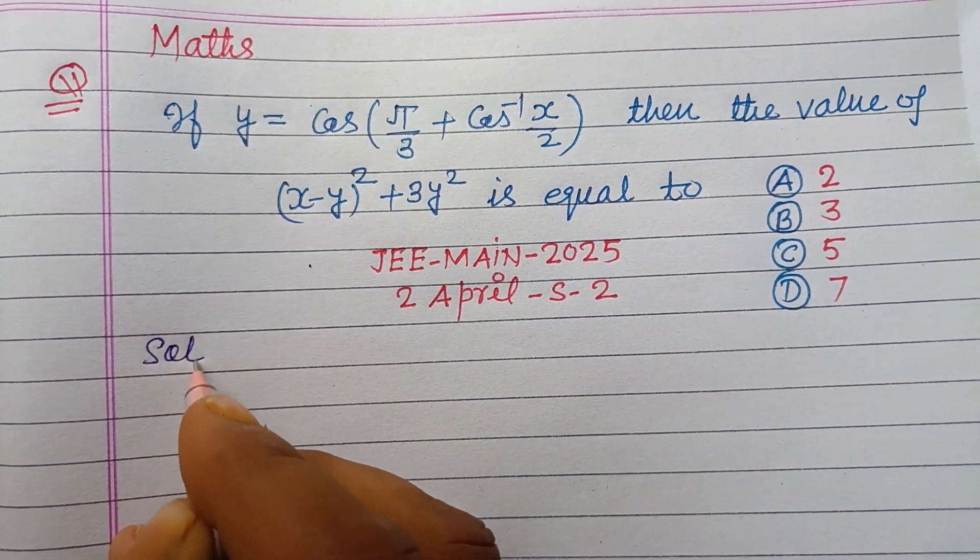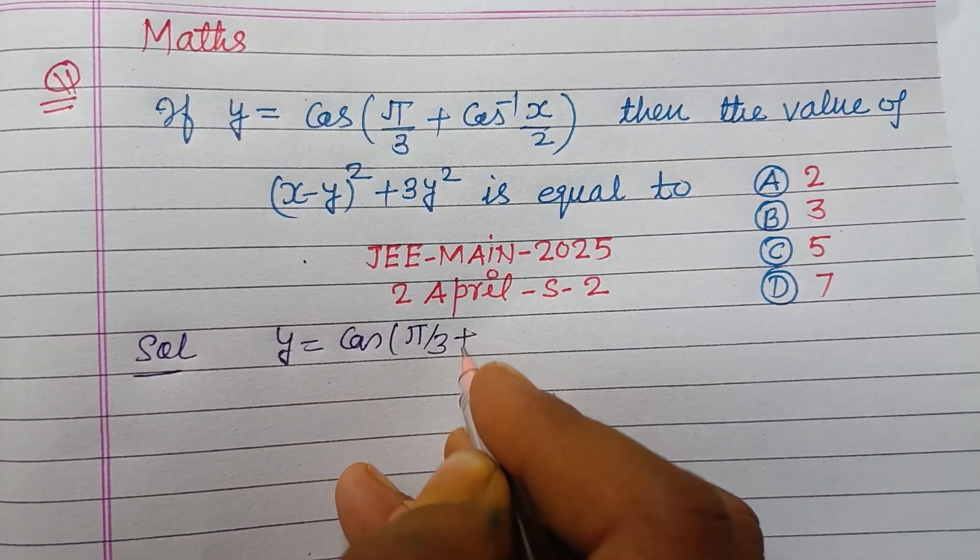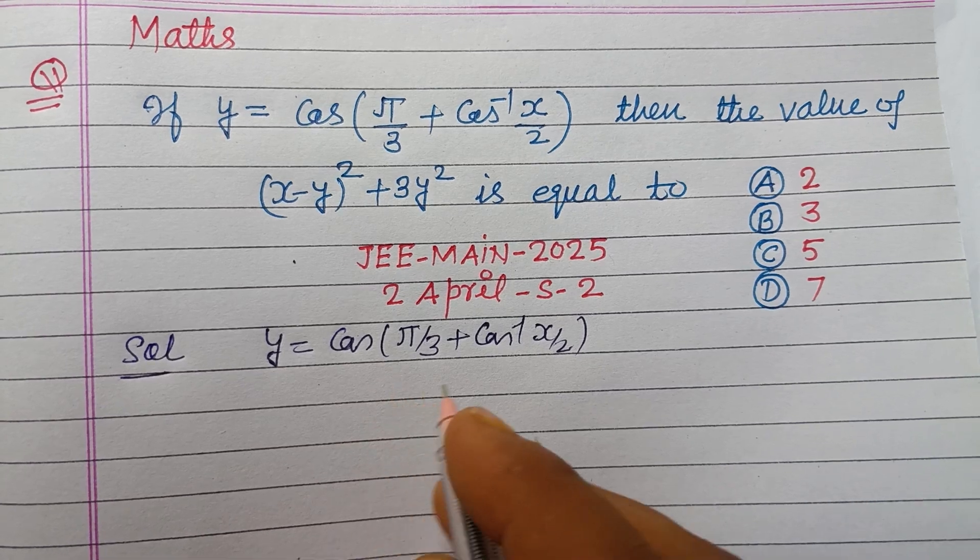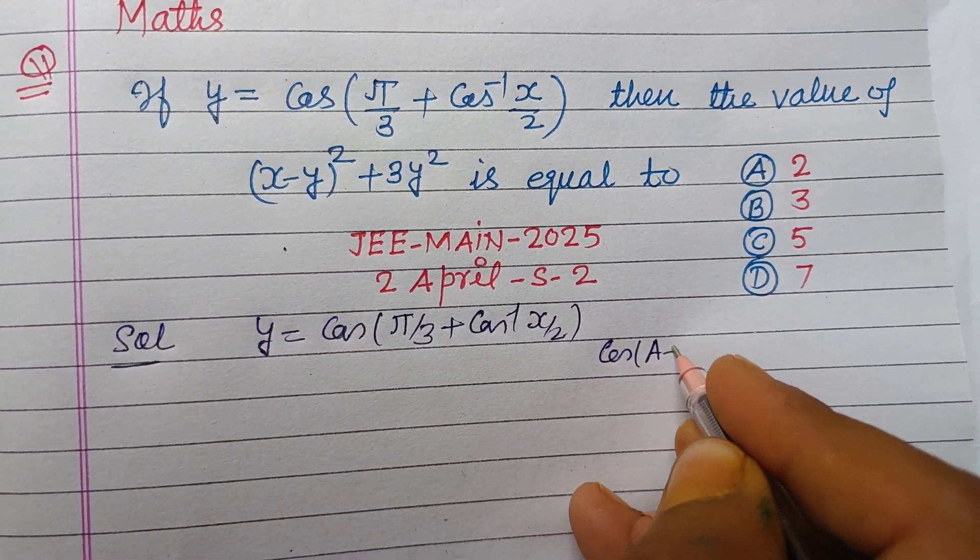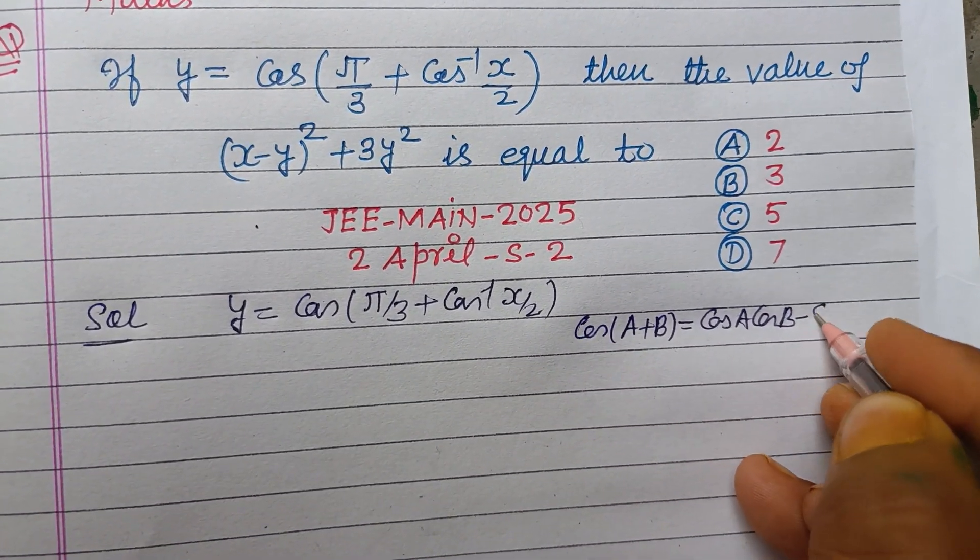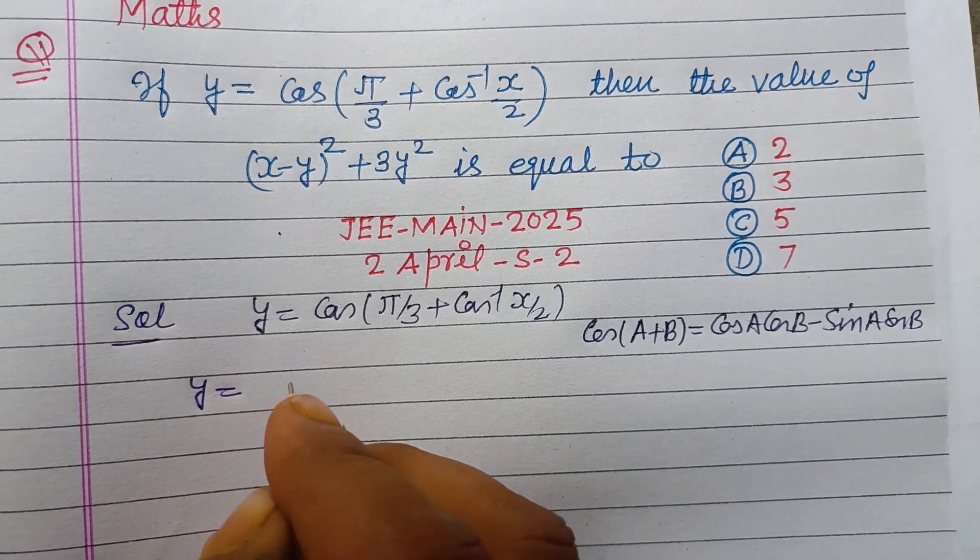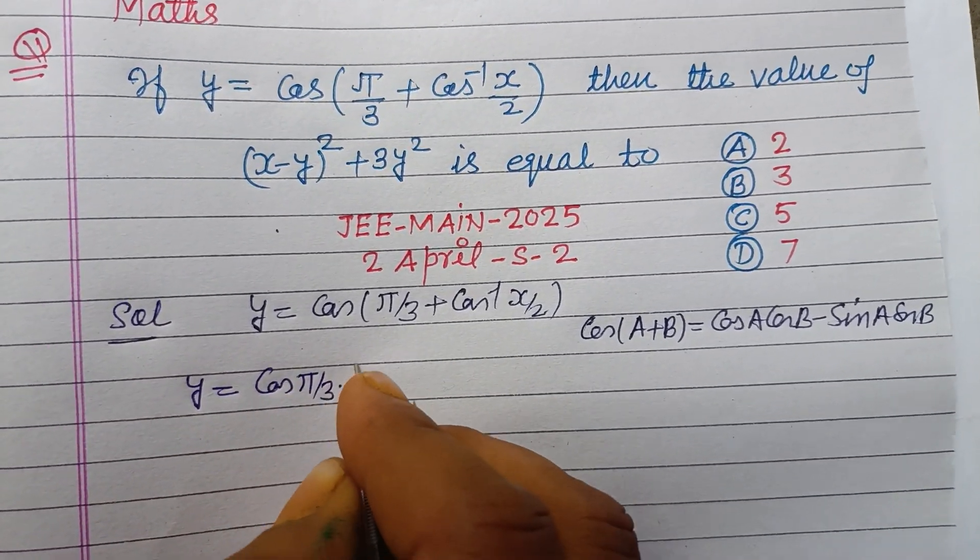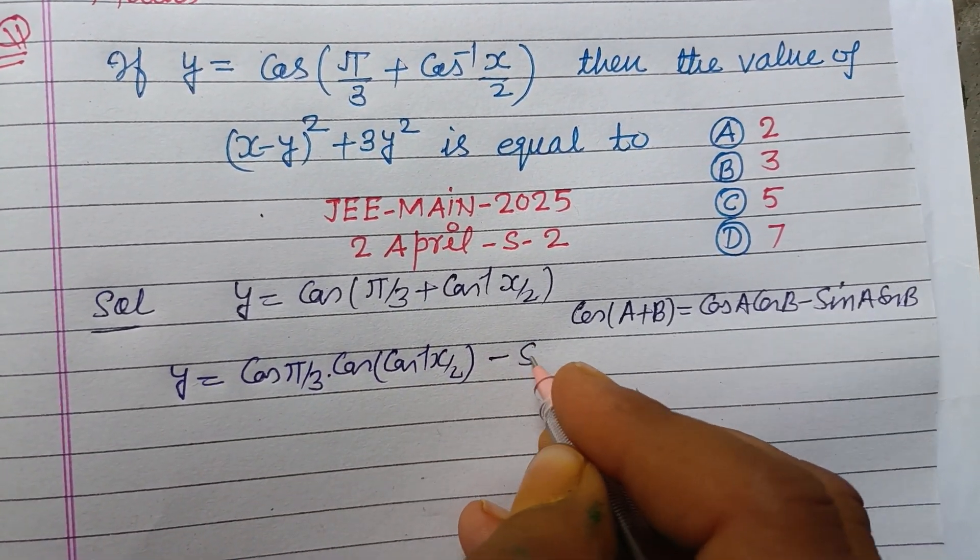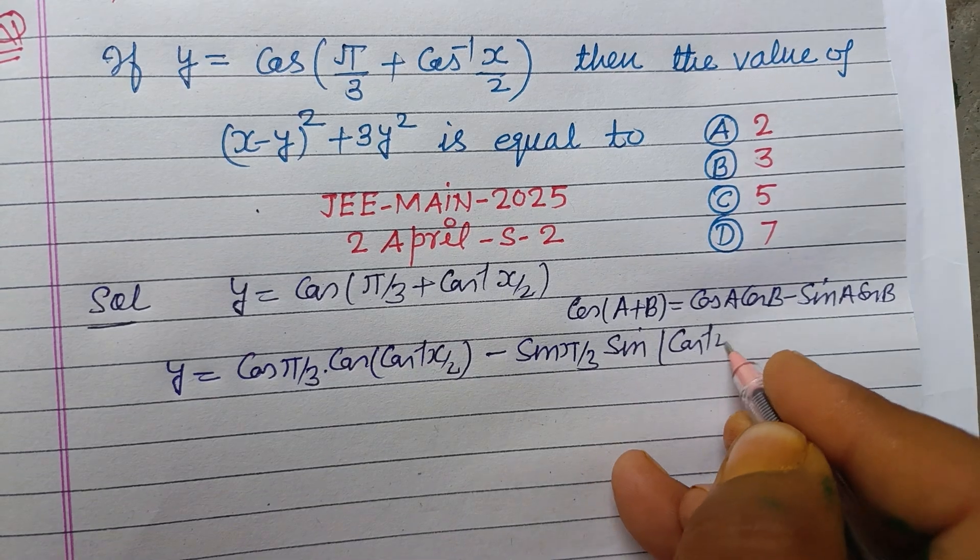So students, here we have y equals cos(πy/3 + cos inverse xy/2). We expand this with the formula cos(A + B) which is cos A cos B minus sin A sin B. So using this, y equals cos(πy/3) into cos(cos inverse xy/2) minus sin(πy/3) sin(cos inverse xy/2).